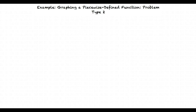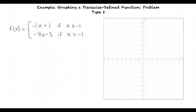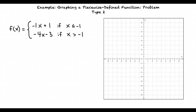This will be an example video on the topic of graphing a piecewise defined function, problem type 2. We are asked to graph negative x plus 1 if x is less than or equal to negative 1, and negative 4x minus 3 if x is greater than negative 1.